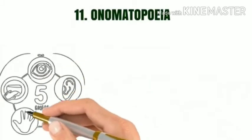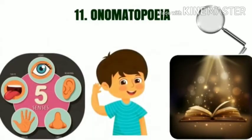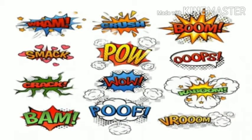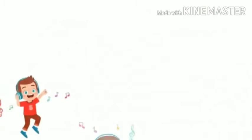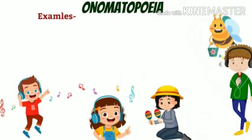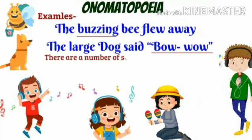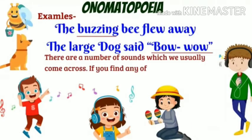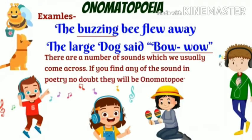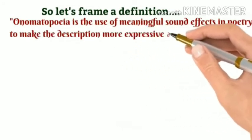Onomatopoeia. We have five sense organs and poetry touches each one of them. When poetry touches your auditory sense, it is onomatopoeia. These are basically sound words — this figure of speech is the figure of sound. If you experience anything about sound in poetry, you can say it is onomatopoeia. Examples: 'The buzzing bee flew away.' 'The large dog said bow wow.' Onomatopoeia is the use of meaningful sound effects in poetry to make the description more expressive and interesting.